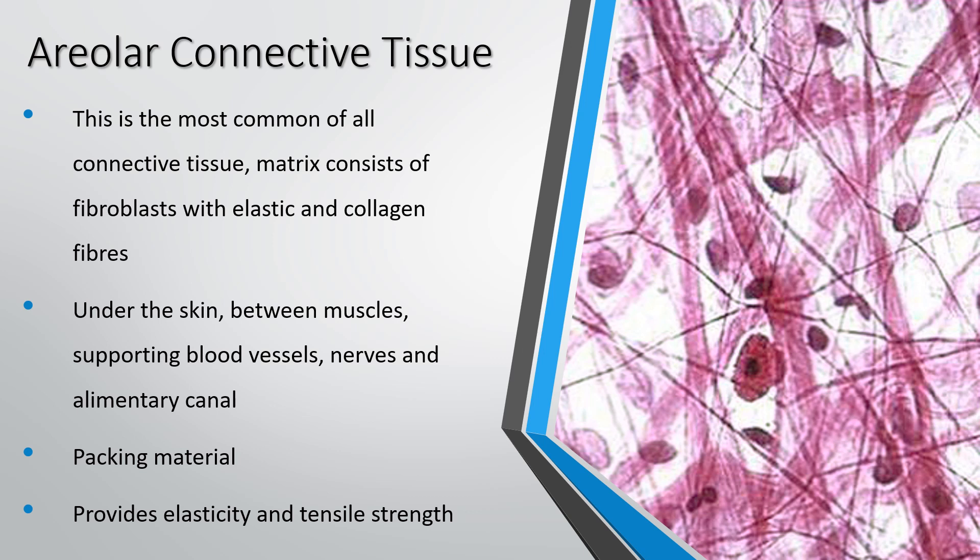Areola connective tissue is the most common of the connective tissues. It consists of a matrix — like a net or mesh — of fibroblasts with elastic and collagen fibres in between. It's very strong and known as the packing material of the body. If there's a space in the body that needs supporting, areola tissue fills it — found under the skin, between the muscles, supporting blood vessels and nerves in the alimentary canal.